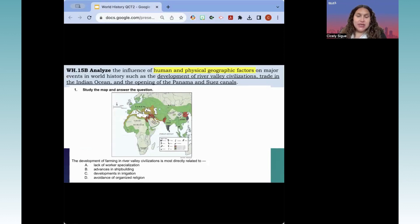In this question, WH-15B, students are being asked to analyze human and physical geographic factors. Please take a minute, refer to your participant guide. This is going to be the second question on your participant guide. Also notice, this is a spiraling SE. So this is an SE that is going to be taught throughout the entire course of world history. It starts as early as the development of river valley civilizations and then it ends with the Panama and Suez Canal. For this section, you are going to identify possible misconceptions. Because you are working and you are able to pace this at your own time and at your own pace, you may be able to go on ahead and answer all three questions in relation to this specific question.